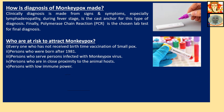How is the diagnosis of monkeypox made? Clinically, diagnosis is made from signs and symptoms — especially lymphadenopathy during the fever stage, which is the cast anchor finding, as lymphadenopathy occurs only in monkeypox and not in similar diseases like smallpox or measles. The final laboratory test is the polymerase chain reaction (PCR), which is the chosen lab test for definitive diagnosis.